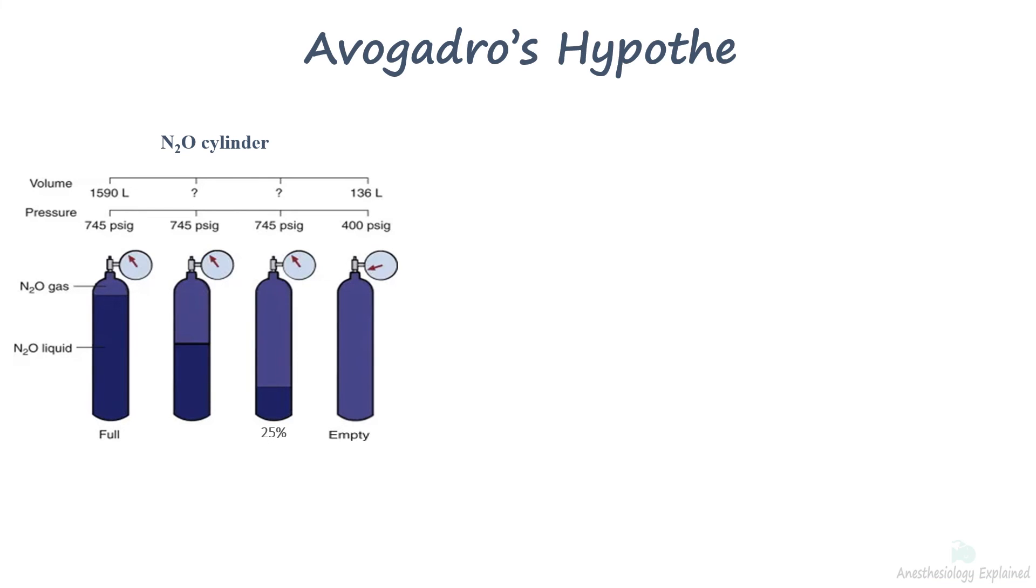The Boyle's law and the conversion factor formula can be applied to cylinders containing a gas in a pure gaseous form. Calculations for nitrous oxide are only applicable once the pressure drops below 745 psi due to the presence of liquid and gaseous forms.